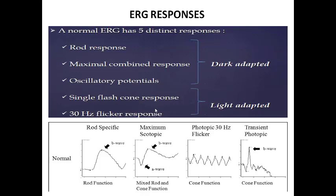The overall ERG response is distinguished by five cases: rod response; rod and cone response (maximal combined response); oscillatory potential — these three responses come from dark adaptation. Whereas single flash cone response and 30 Hz flicker response are from light adaptation. From the diagram, you can notice the effect of rod-specific and combined rod-and-cone function, cone function alone, and transient photopic cone function. These are the responses obtained from ERG regarding the function of our retina.